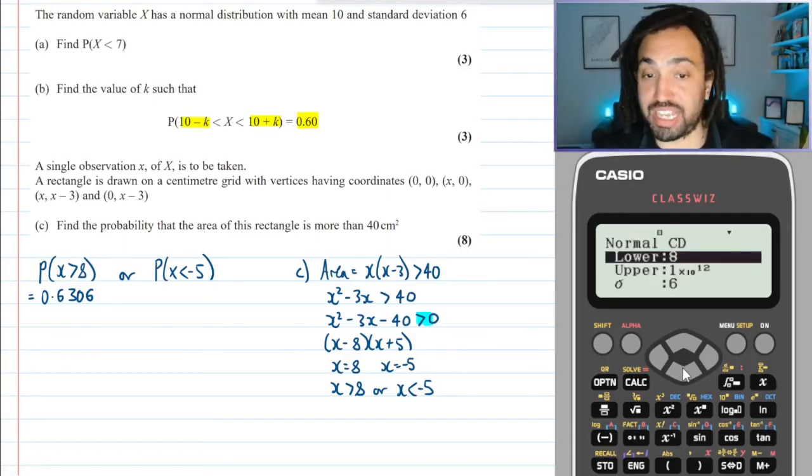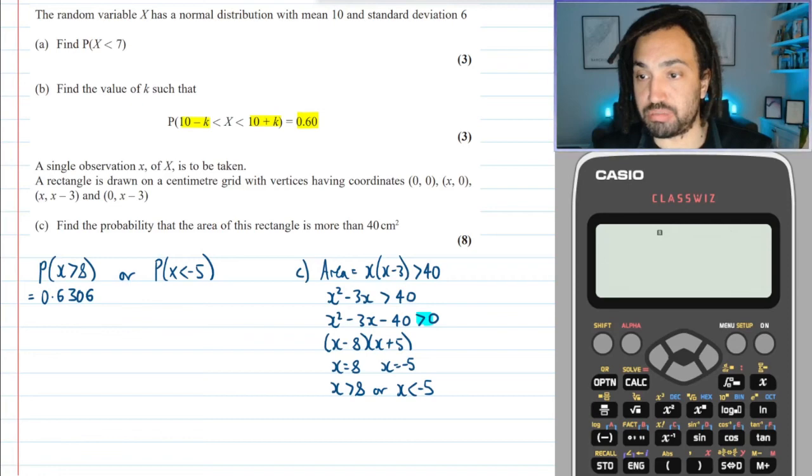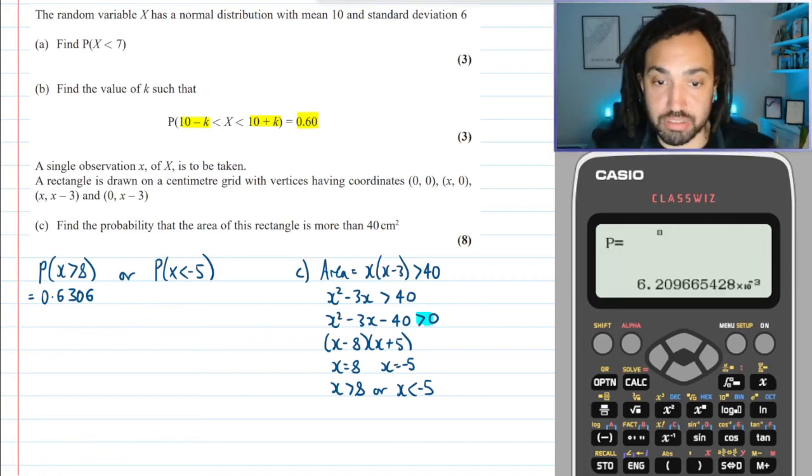And then we need to find also the probability that x is less than -5. So that would be the upper limit -5, so lower limit I'm just going to put a huge negative number. That should do the job. And that tells me that is 0.0062.